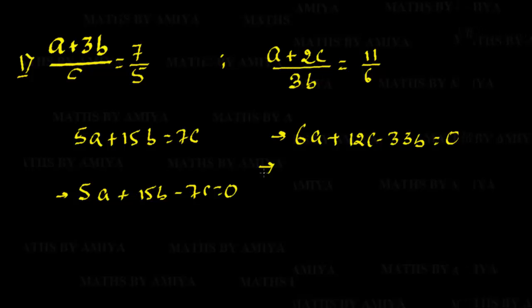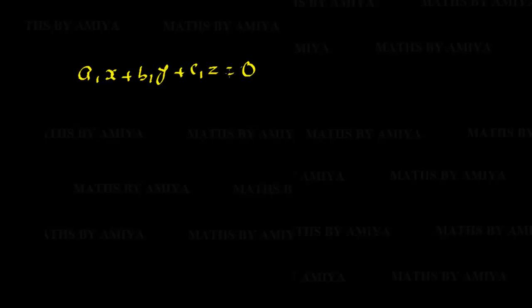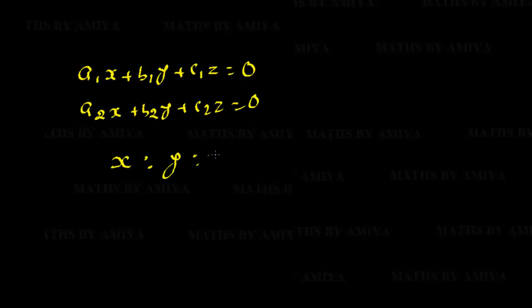Let's check what we mean by the determinant method. If we have A1·x + B1·y + C1·z = 0 and A2·x + B2·y + C2·z = 0 — if we have three variables, two equations equal to 0, or n variables and n−1 equations equal to 0 — we can find the ratio directly. The variables are x, y, z, and A1, B1, C1, A2, B2, C2 are the coefficients.